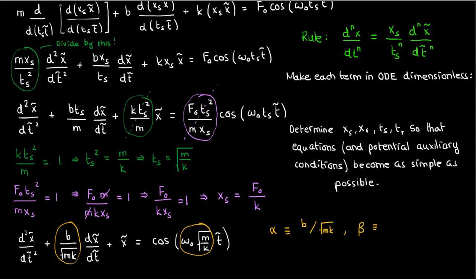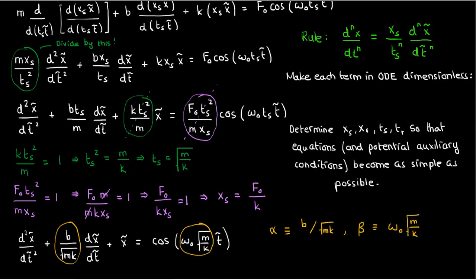We can define these two lumps of constants as two new parameters, α and β, to simplify our writing, in which case our ODE becomes d²x̃/dt̃² + α·dx̃/dt̃ + x̃ = cos(β·t̃).